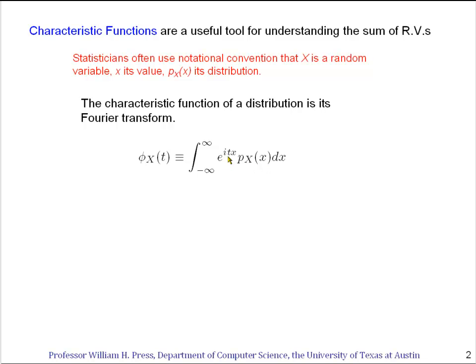The characteristic function of a probability distribution for capital X is written phi sub X of t.